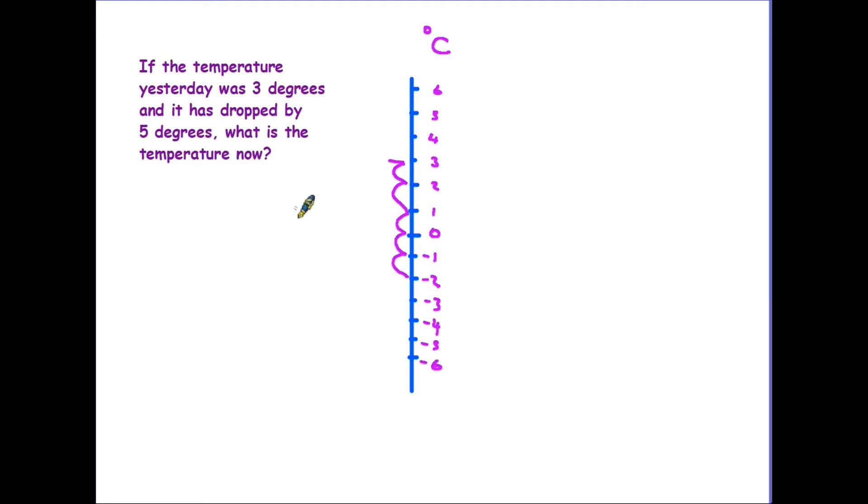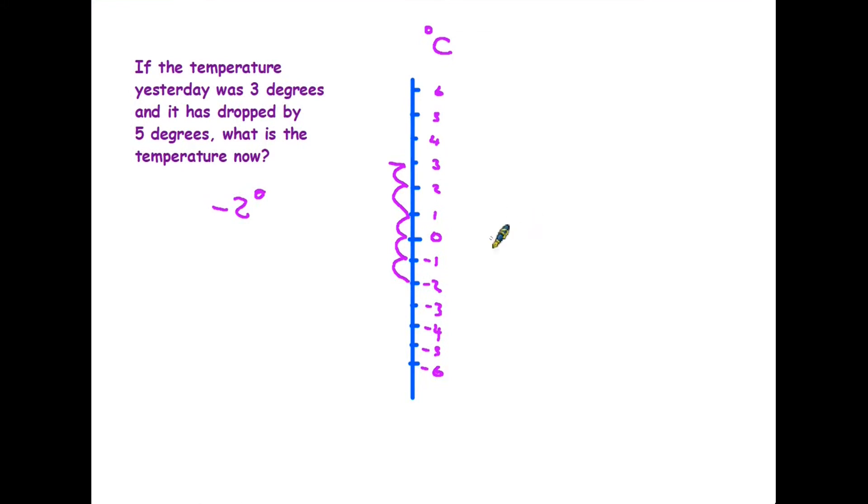One important point to note here as we are going down in the steps is we do not miss out the zero. Zero might mean nothing, but it's a very important number and must be included in the steps as you go down.